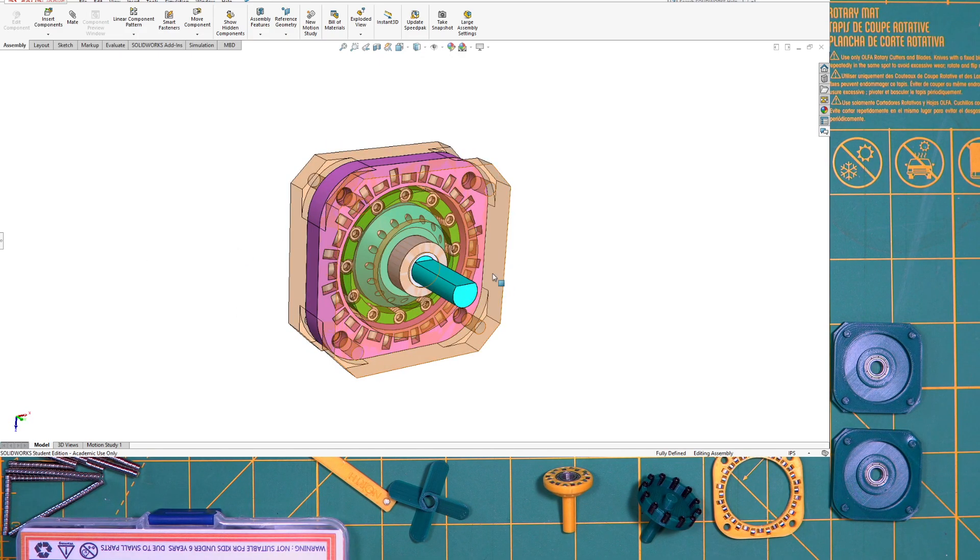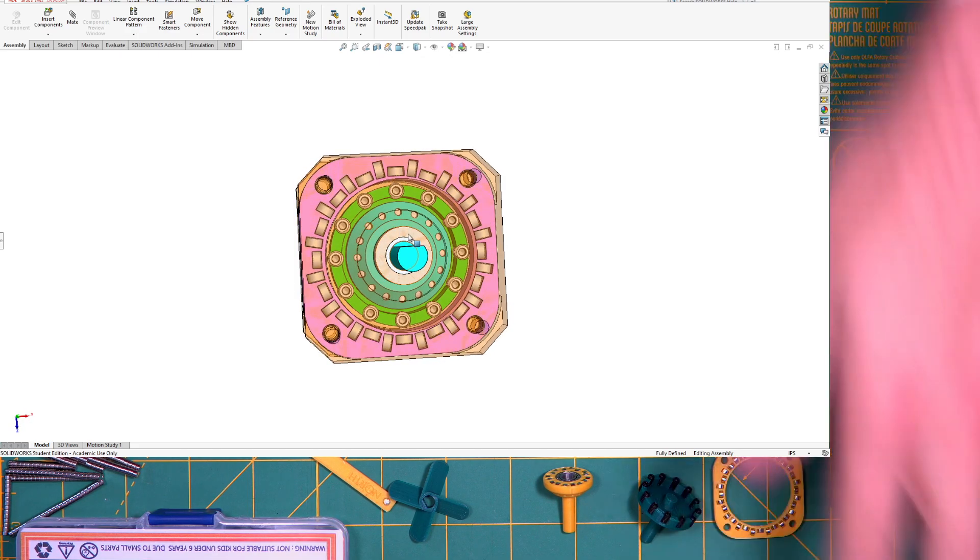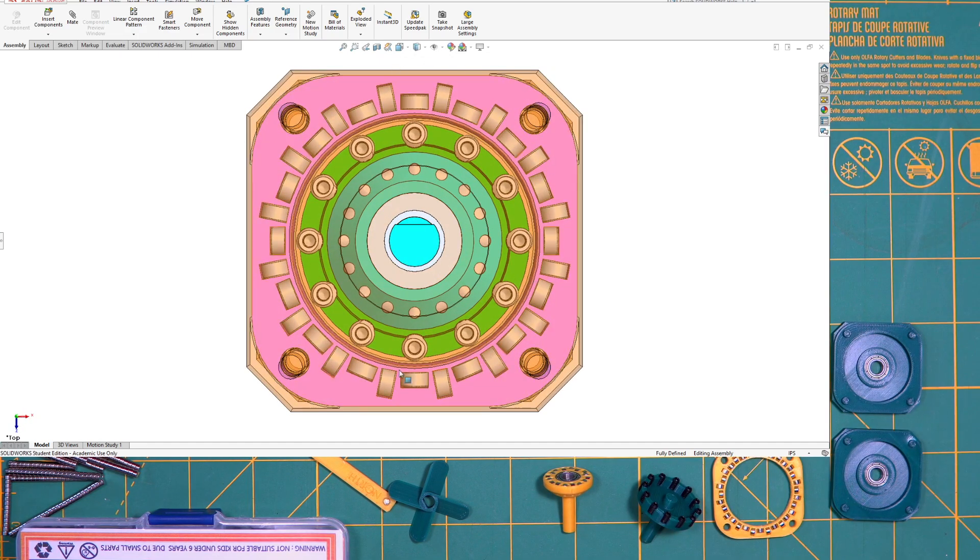All right, so I guess for starters, you probably see this strange sort of pattern that these magnets are in. So this is what's called a Hallback Array, which is basically a passive way to arrange magnets to move the strength of magnetic field to primarily one side of the magnets. So it basically cancels out the magnetic fields on one side to slightly increase the forces on the other side.